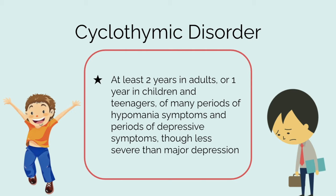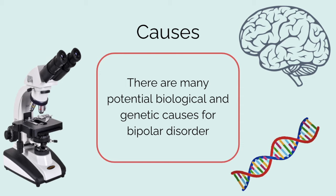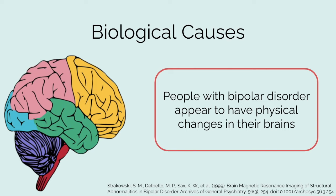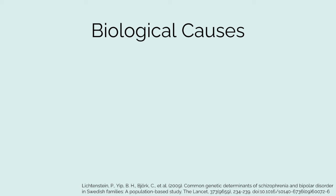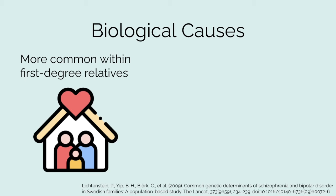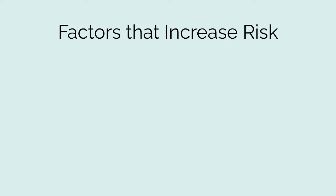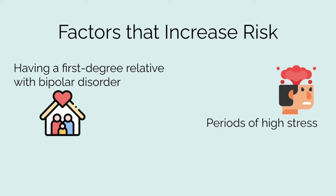There are many potential biological and genetic causes for bipolar disorder. Studies of individuals diagnosed with bipolar disorder found that they appear to have physical changes in their brains. Bipolar disorder is also more common in people who have a first-degree relative, such as a sibling or parent, who has the disorder, and research is ongoing to find genes that may be involved. Other factors that may increase risk or trigger the first episode include having a first-degree relative with bipolar disorder, periods of high stress such as the death of a loved one or another traumatic event, or drug or alcohol abuse.